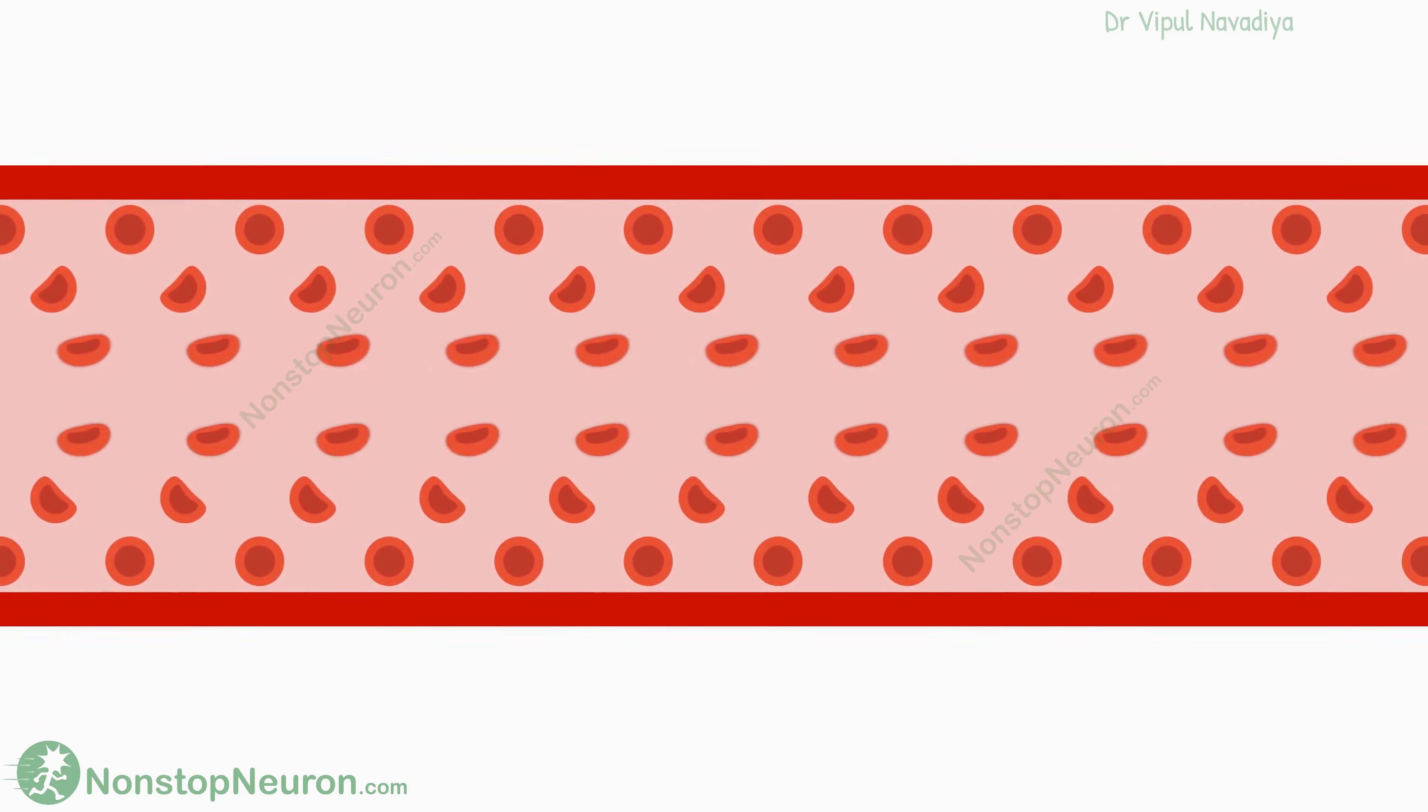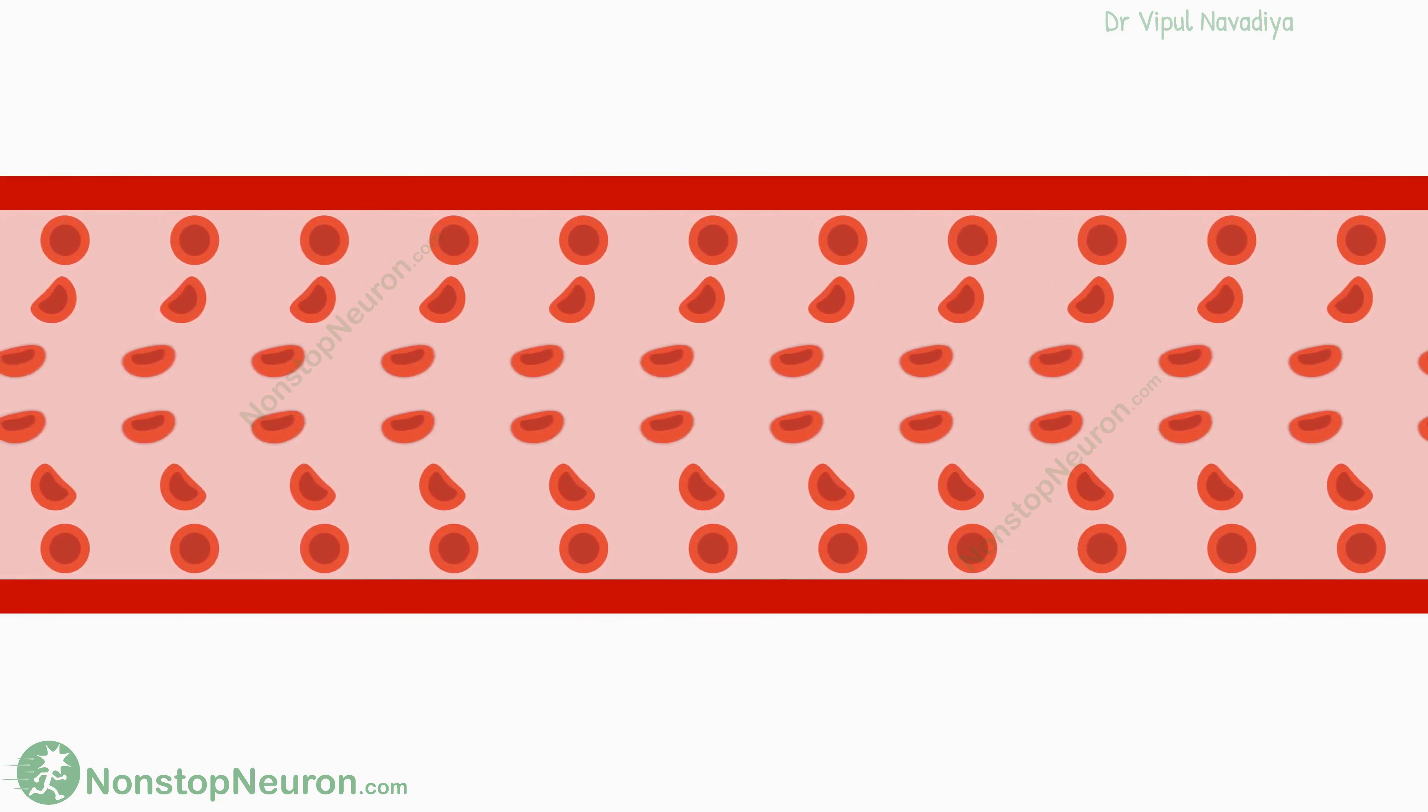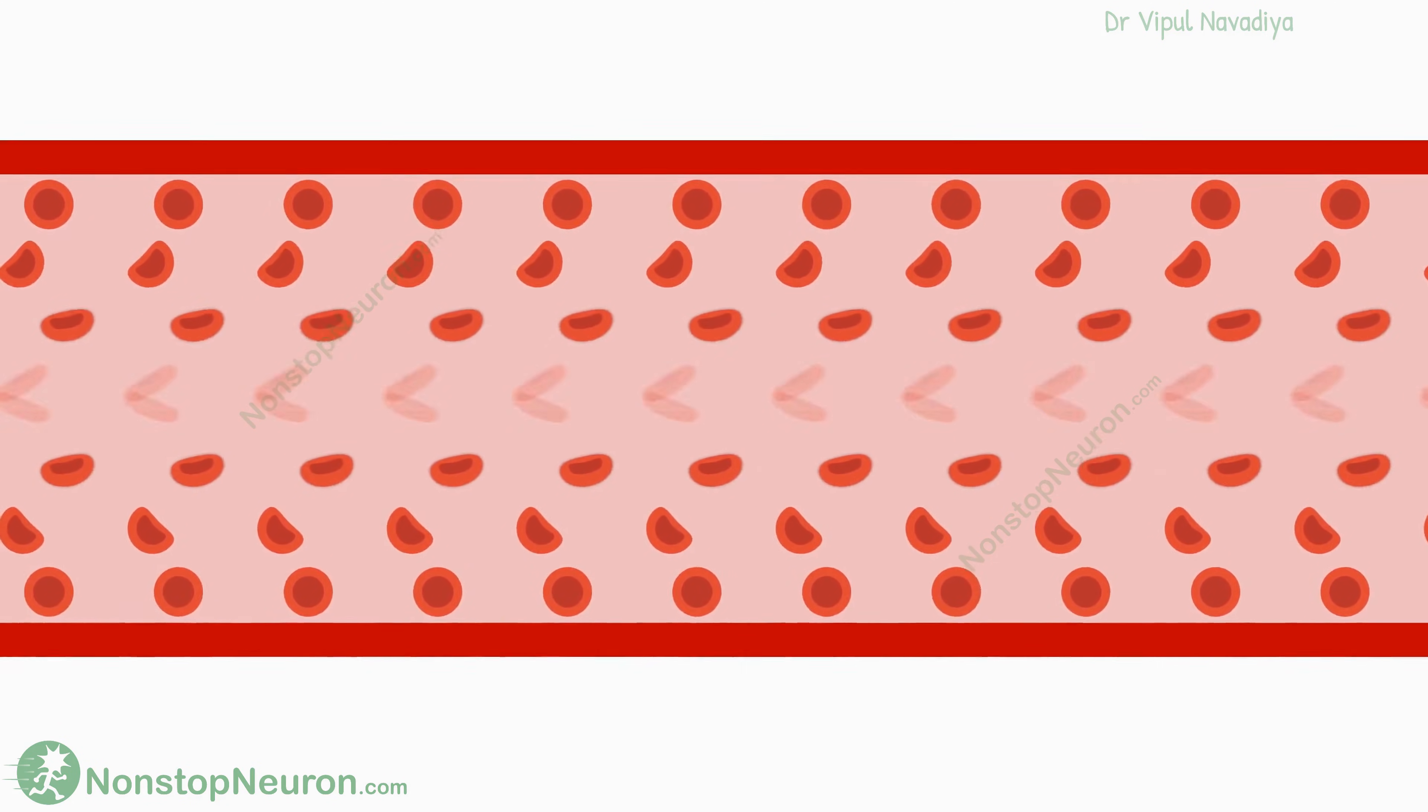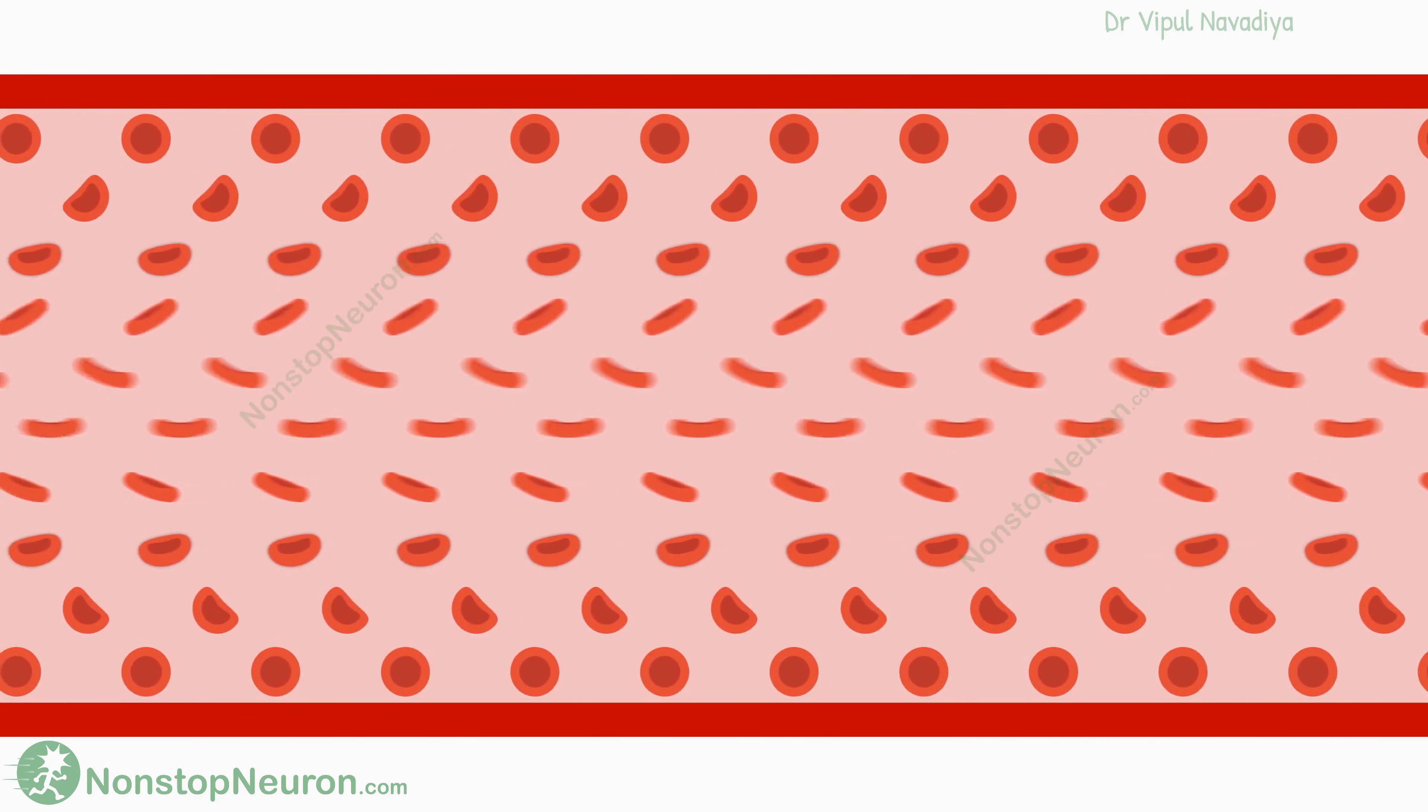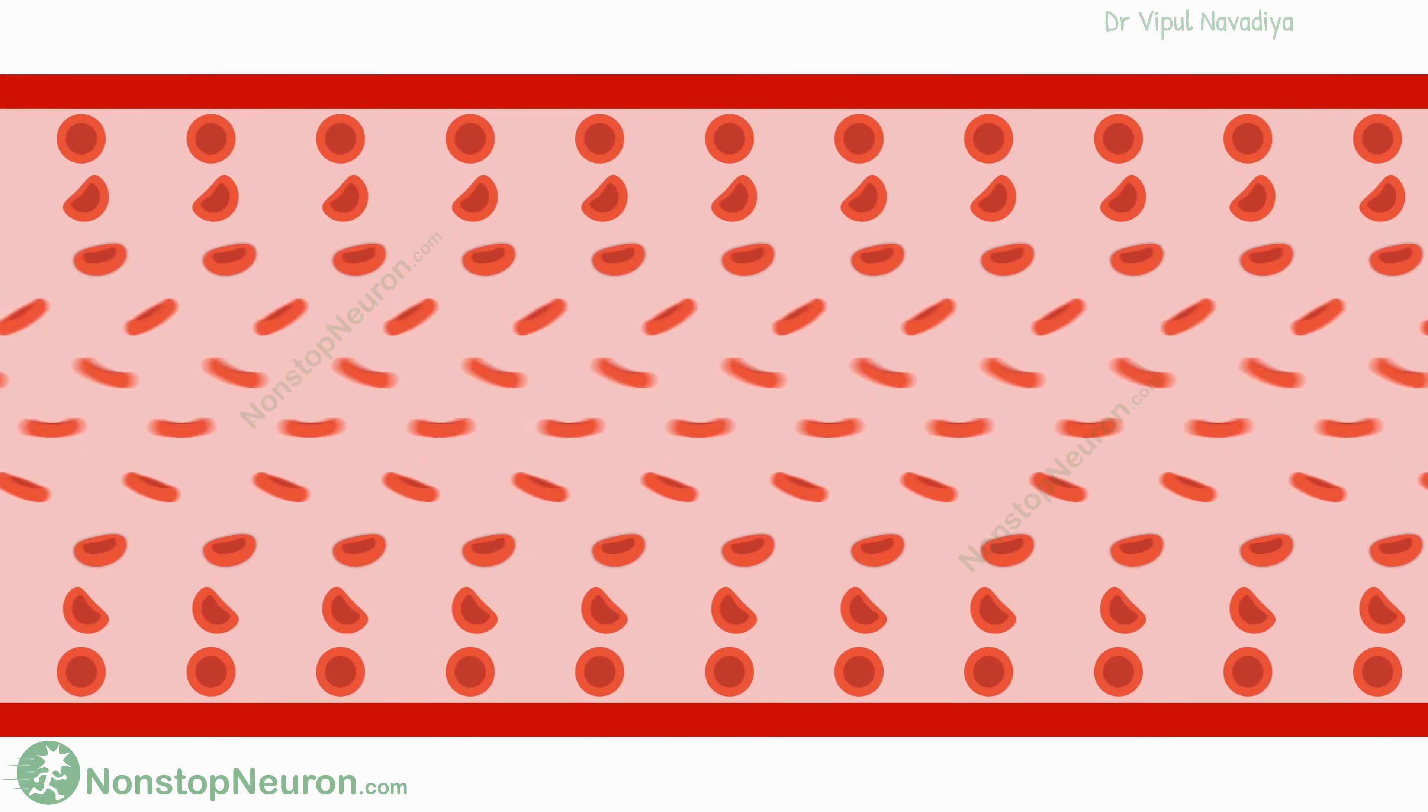Now when the vessel gets narrower, it's these fastest flowing streams that are lost. So the flow decreases exponentially with a decrease in radius. And vice versa, when the vessel dilates, the new layer that develops at the center flows faster than all existing layers. So flow increases very rapidly with an increase in radius.